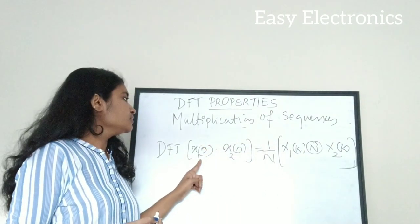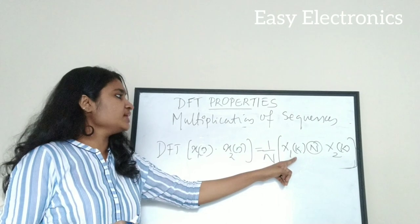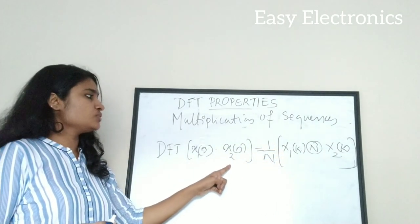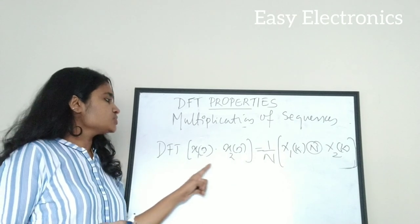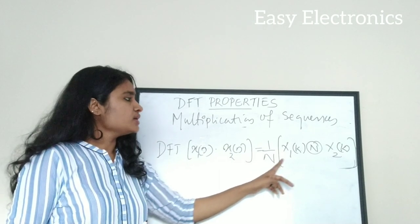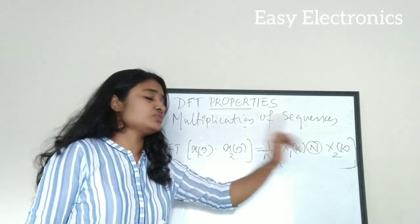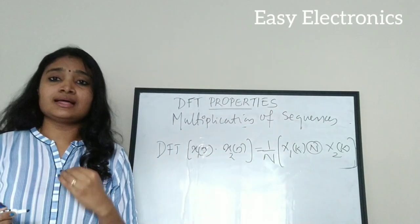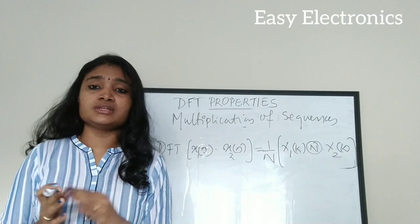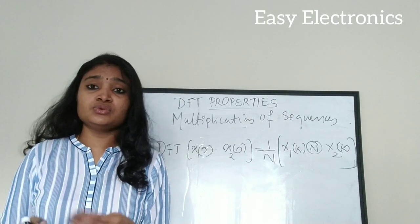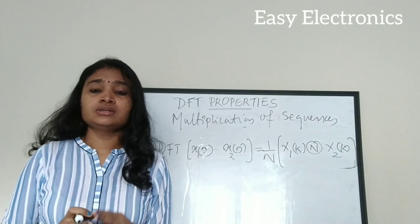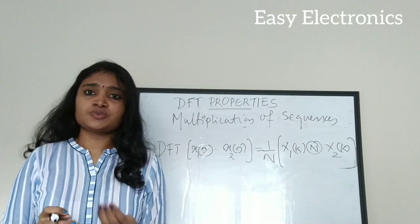So X1(k) is the DFT of x1(n) and X2(k) is the DFT of x2(n), and the DFT of their product equals (1/N) times X1(k) circular convolution X2(k). The multiplication of sequences property and the circular convolution property are very much related, so studying them together makes it easy to remember both.